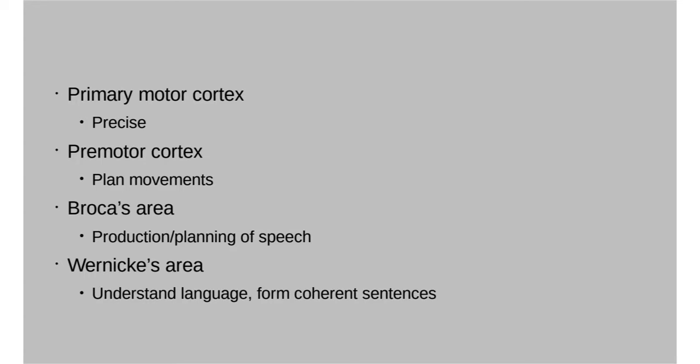The premotor cortex is tied to the primary motor cortex in that any sort of movements that are planned out happens in the premotor cortex. This is kind of subconscious — you're not actually thinking about what you want to do with your hands. Just before a movement occurs, your brain is planning those movements, and that is the premotor cortex responsible for that.